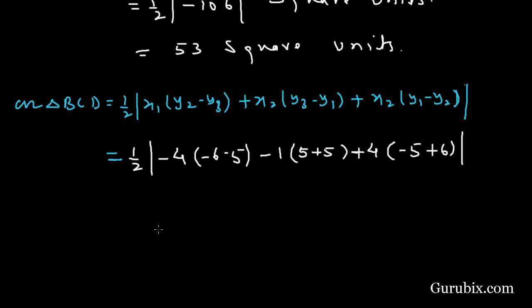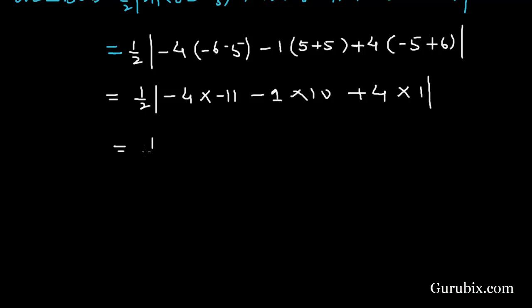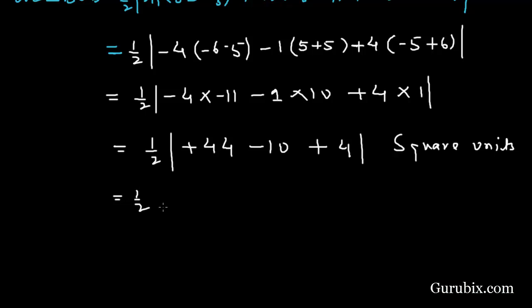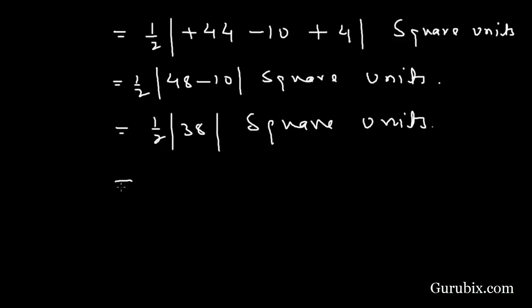Continuing: x3 = 4, y1 - y2 = -5 + 6 = 1. This gives (1/2)|(-4)(-11) + (-1)(10) + (4)(1)| = (1/2)|44 - 10 + 4| = (1/2)(38) = 19 square units.